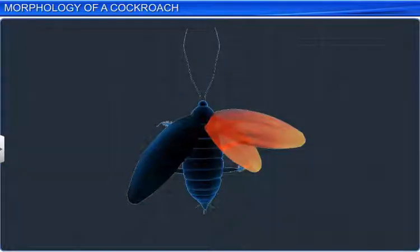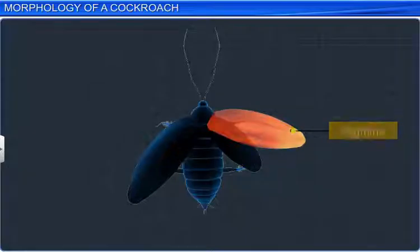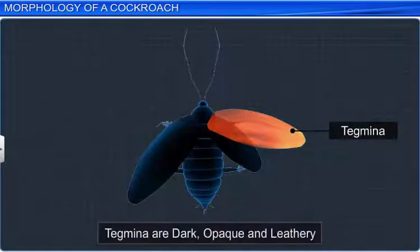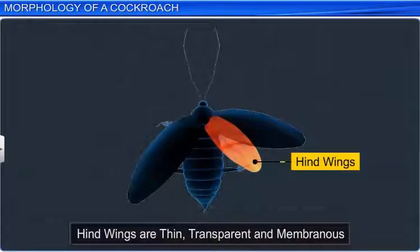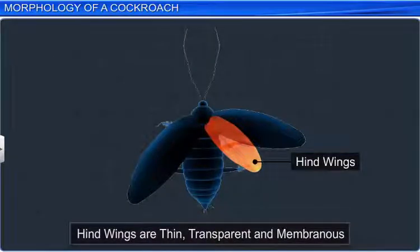Moreover, the mesothorax and metathorax bear a pair of wings. The mesothoracic wings, or the forewings, are called tegmena. These wings are dark, opaque, and leathery, and cover the hind wings at rest. While the hind wings are thin, transparent, and membranous, and are used in flight.